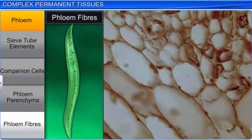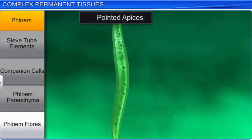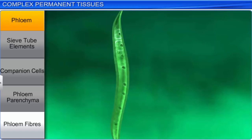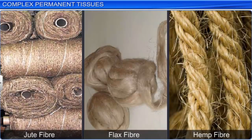Phloem fibers, or bast fibers, are made up of sclerenchymatous cells found in secondary phloem. They are elongated, unbranched with pointed apices, and their cell wall is quite thick. On maturity, phloem fibers lose their protoplasm and become dead. Jute, flax, and hemp are some examples of commercially used phloem fibers.